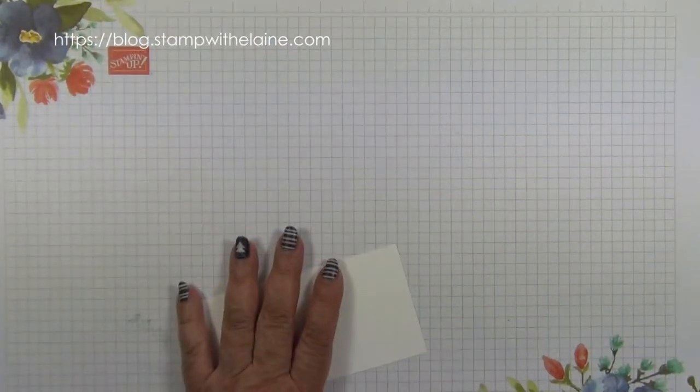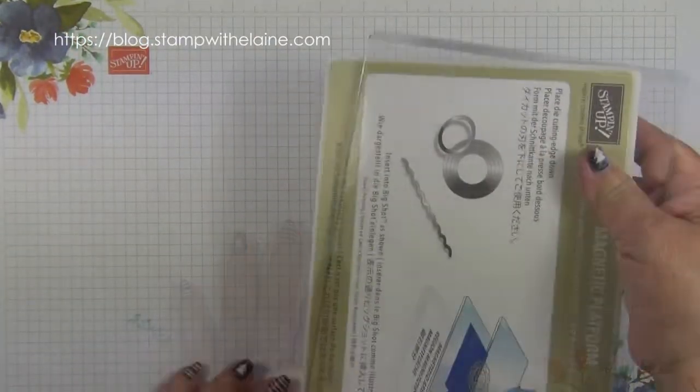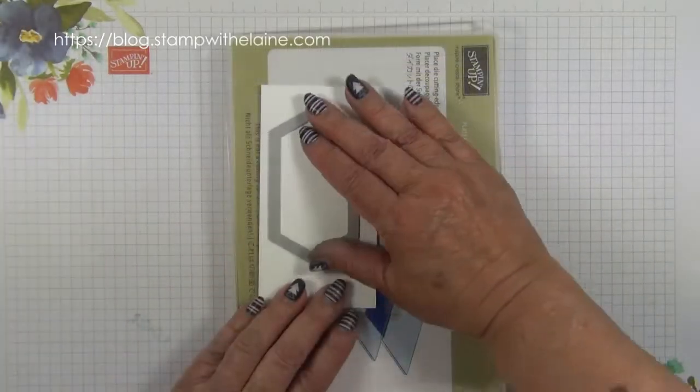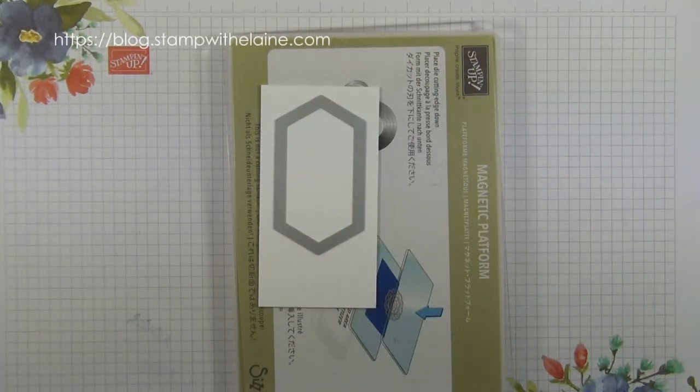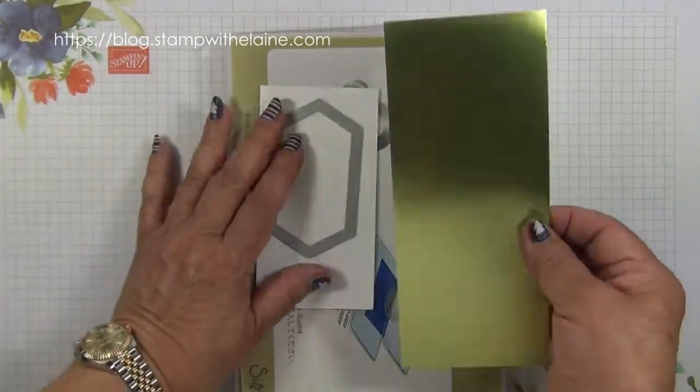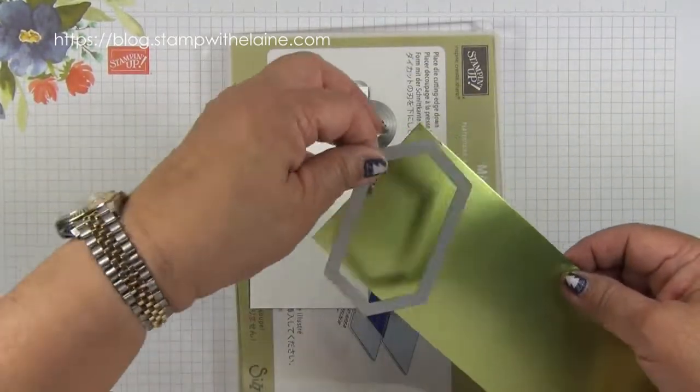We'll set that aside while we do the rest of the die cutting. So you need one stitched label on whisper white and you need one cut with the old olive paper.